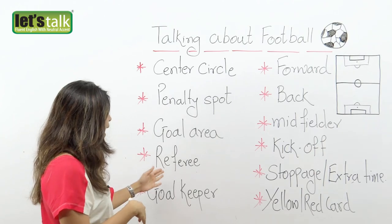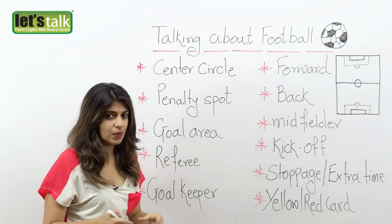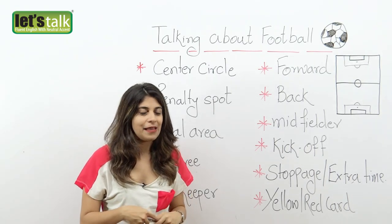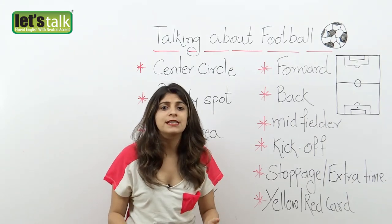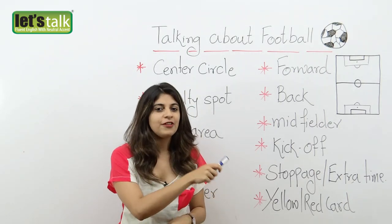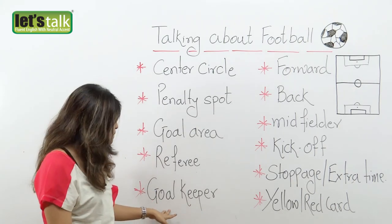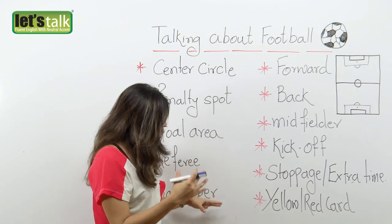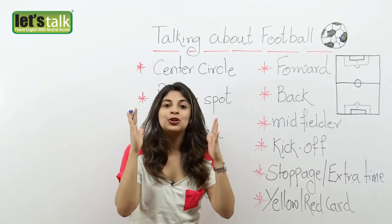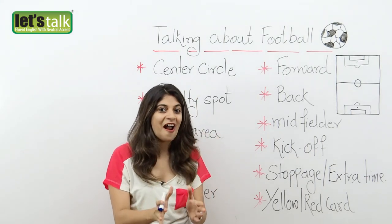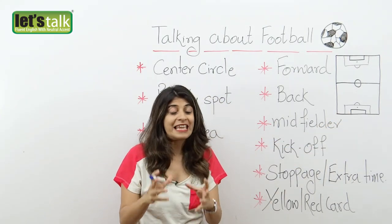Now let's understand who the team players are. The first is a referee — quite an important person, because he is in charge of the game and ensures that the rules are followed by the team players. Then we have a goalkeeper, one of the most important players. Goalkeepers stay in the team's goal to stop the opposing team players from scoring. They are always in the goal area and are key players for the team.